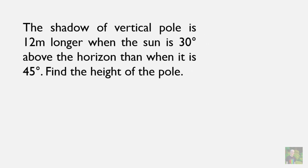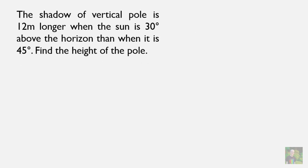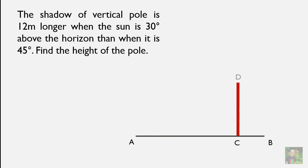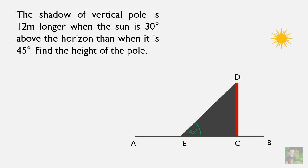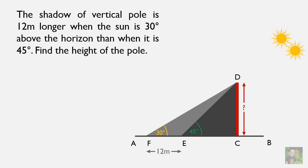To solve any question of height and distance, we first need to convert the language into a diagram. This question says there is a vertical pole, so let AB be the ground and CD be the pole. It says there are two positions of the sun — one is 45 degrees from the horizon and another is 30 degrees. When the sun is at 30 degrees, the shadow is 12 meters longer than when the sun is at 45 degrees.